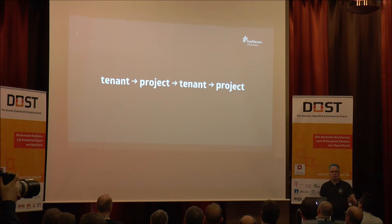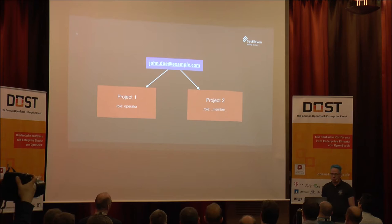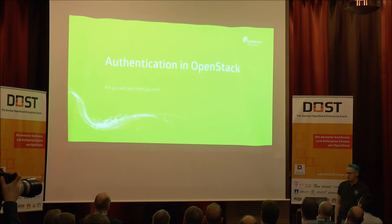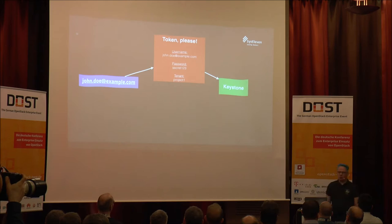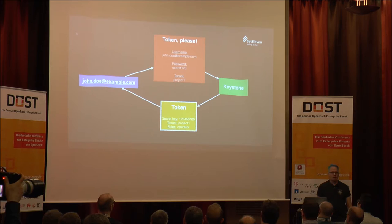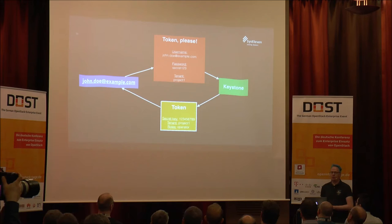Maybe tenants, maybe projects — I think we're calling them projects now. So if we have a user, that user can have different roles in different projects, which is pretty nice. But we also need to make sure that the user authenticates themselves, and they do that against Keystone. They ask for a token — they send their password, their username, and they say which tenant or project they want to get a token for. Then Keystone, if it likes the password or whatever authentication scheme you use, gives you back a token.